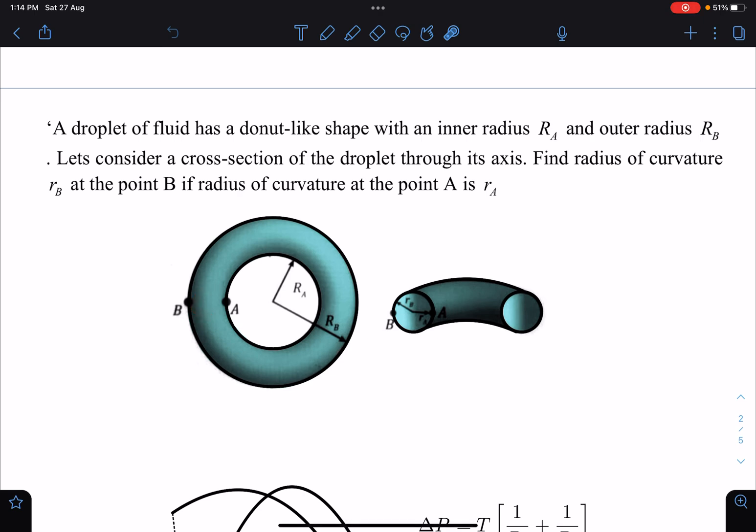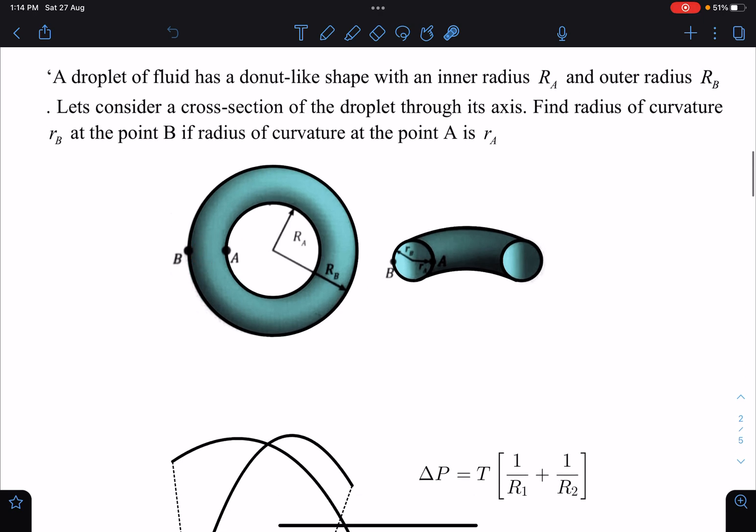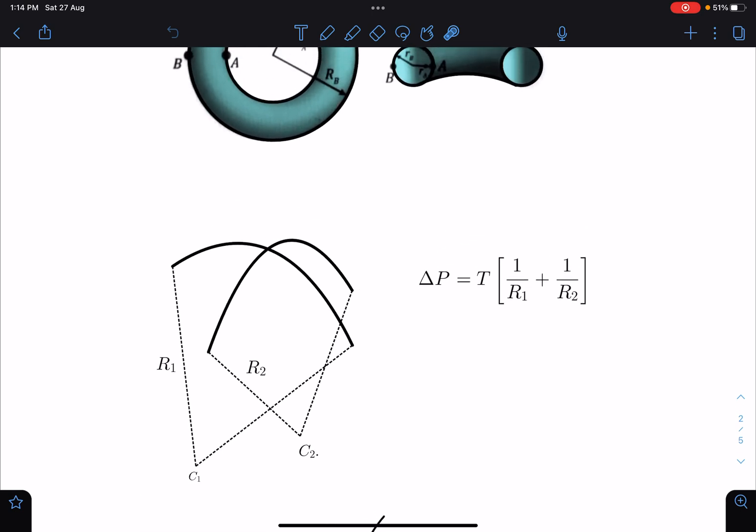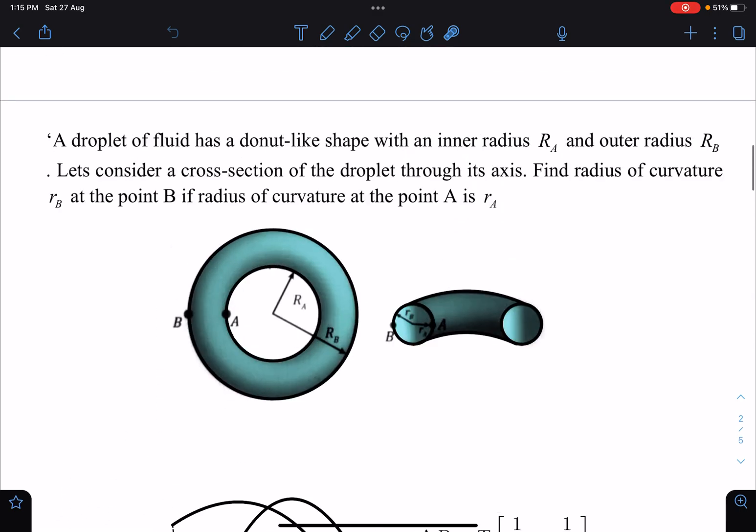Here we are going to use Laplace equation. For two mutually perpendicular planes, if radius of curvatures are given R_1 and R_2, then excess pressure can be written as T times (1/R_1 + 1/R_2). That is for single surface like a drop. If it was a film, then 2 would have come here.